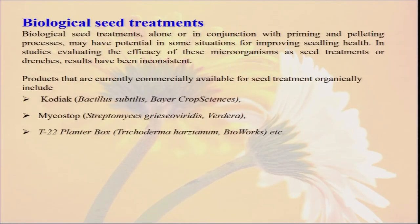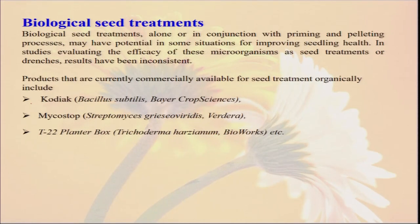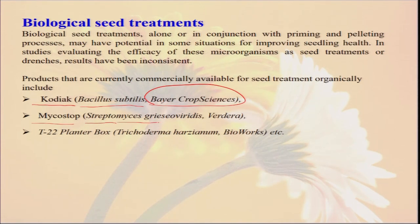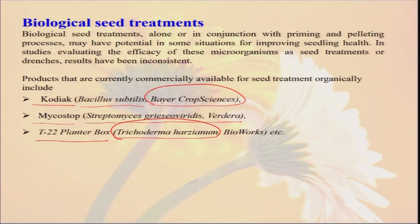There is another seed treatment called biological seed treatment. Just as we are promoting rhizobium seed treatment with rhizobium inoculants with the help of jaggery so that nitrogen fixation capacity of the soil will be enhanced, similarly we can also do seed treatments with some microbial organisms like Kodiak — containing Bacillus subtilis, produced by Bayer Crop Science. Similarly, we can have Mycostop, where we are inoculating with Streptomyces and Vardera; T-22 Planter Box where we are using Trichoderma harzianum. Whenever we inoculate this type of biological seed treatment, these organisms stick with the seed and go to the field. So whenever there is later-stage attack by insect pests or some diseases, they will help to prevent the crop from their infestation.